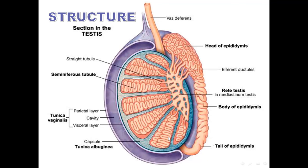Here is a close-up view of the testis structure. It is surrounded by the fibrous capsule, the tunica albuginea, divided into lobules by septa. Each lobule contains two seminiferous tubules. The seminiferous tubules fuse to form the rete testis, which is connected with the epididymis by vasa efferentia. The testis is surrounded by a serous sac called the tunica vaginalis, with a parietal layer, visceral layer, and a cavity.